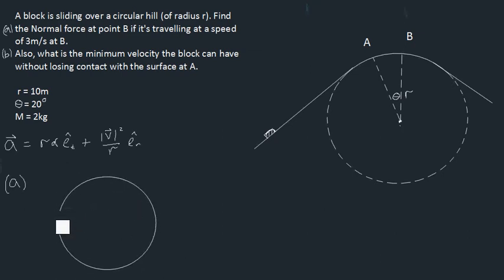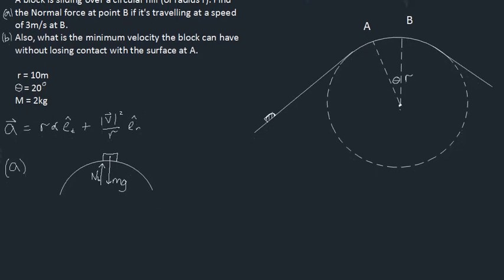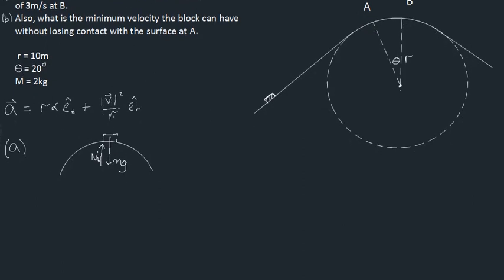Here is our circular hilltop — only the top is circular. This is our block sitting at the very top. The forces acting on our object: you'll have one force due to gravity trying to push the block down, magnitude mg. Because the block is touching the surface, you'll have a reactionary force in the normal direction, Nᴮ — the normal force at point B. We're going to disregard friction in this particular case.